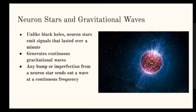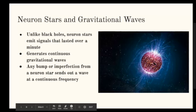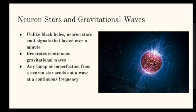Neutron stars and gravitational waves. Unlike black holes, neutron stars emit signals that last over a minute instead of a fraction of a second. They generate continuous gravitational waves, meaning that the gravitational wave being sent out goes at a continuous frequency. Any bump or imperfection from a neutron star can send out a wave. This was also observed in 2017.